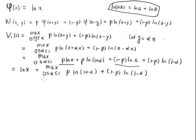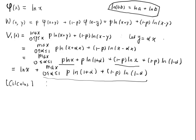This inner part is purely a calculus problem. We call this inner function f(α), defined as p·log(1 + α) + (1 - p)·log(1 - α), and we are trying to find its absolute maximum on the interval [0, 1].